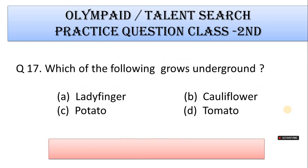Number 17: Which of the following grows underground? A. Lady finger, B. Cauliflower, C. Potato, D. Tomato. Correct answer is Option C. Potato.